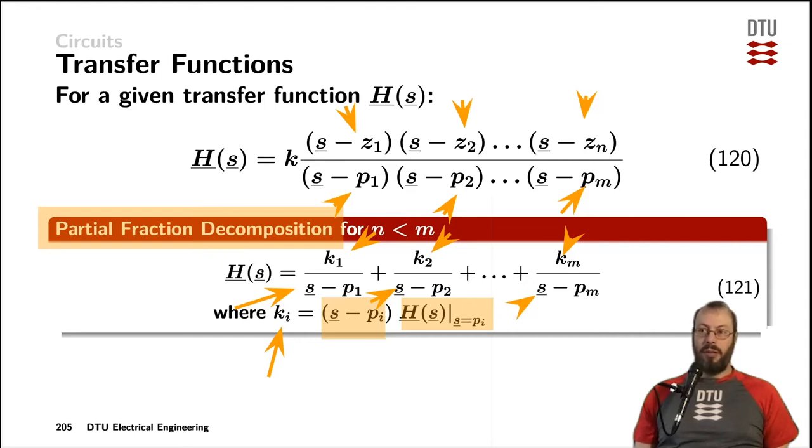That means if we, for example, take two here, we would actually multiply with the s minus p2. And that means that it would actually cancel out, and all the other zeros and poles would be calculated at that frequency s equals p2.